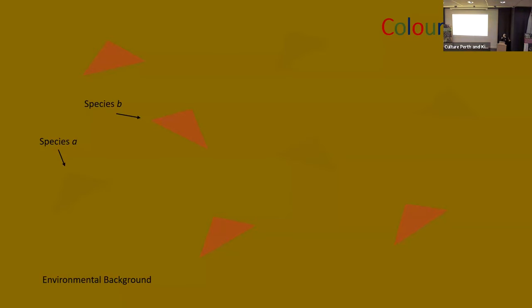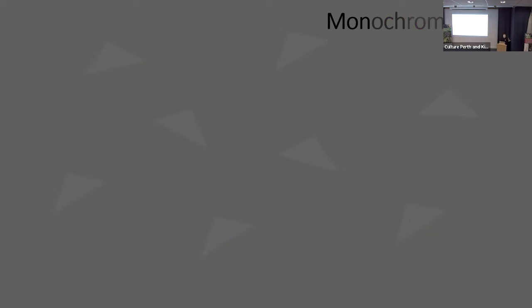The thing I want to come back to throughout this talk is that camouflage is as much an adaptation to the perception and visual abilities of the thing you're trying to deceive as it is to the environment itself. As an example: with colour vision it's obvious one fake moth species is much more camouflaged than the other. If you switch to a monochrome visual system and convert the image to grayscale, suddenly both species look equally camouflaged. The perception of predators acts like a filter that defines the colour space you need to be cryptic in.